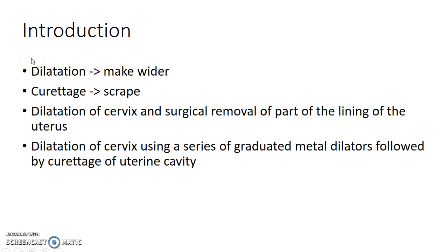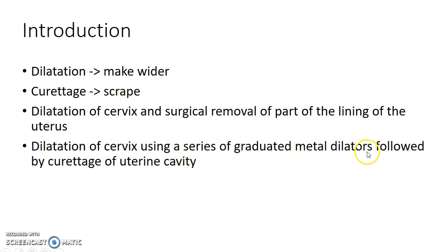Dilatation and curettage is known as DNC for short. Dilatation refers to the process of making the cervix wider, and curettage refers to the process of scraping the uterine cavity. Basically in DNC, you do dilatation of the cervix and surgical removal of part of the lining of the uterus. It is a process which involves dilatation of the cervix using a series of graduated metal dilators, followed by curettage of the uterine cavity.